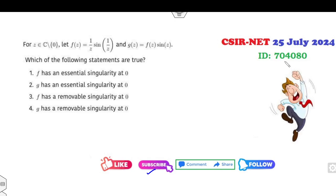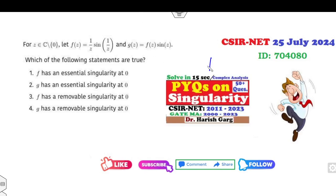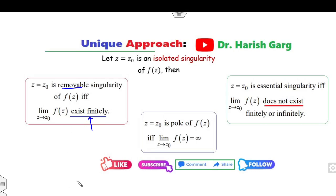The first question is Question ID 704080, related to essential singularity and removable singularity — one of the easiest questions in July 2024. The shortcut trick: compute the limit of f(z) at the given point. If the limit is finite, it's a removable singularity. If the limit is infinity, it's a pole. If the limit does not exist, it's an essential singularity.